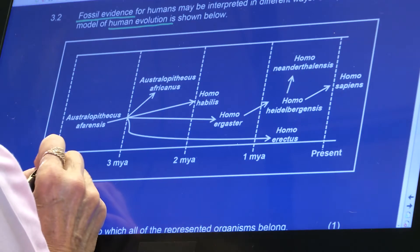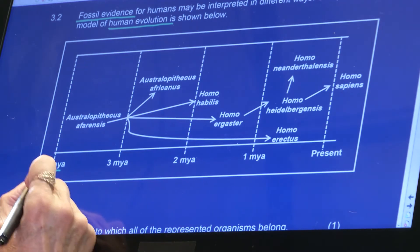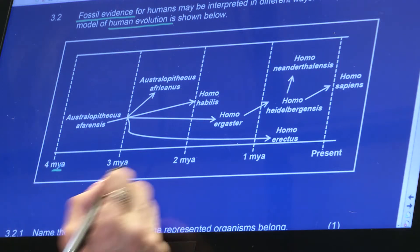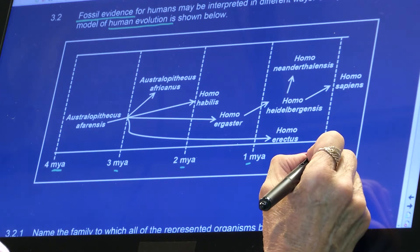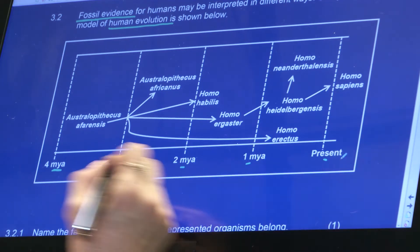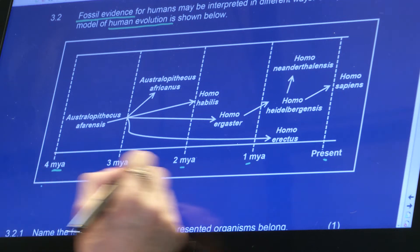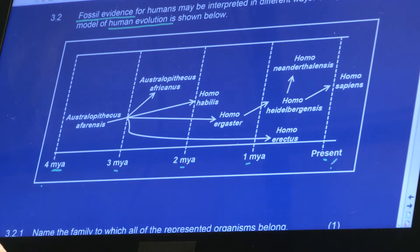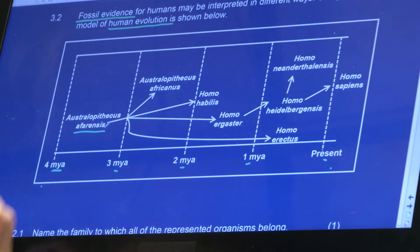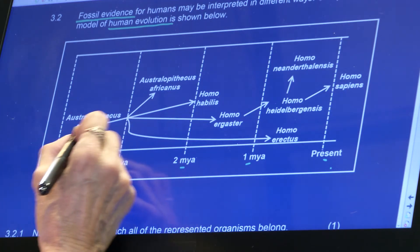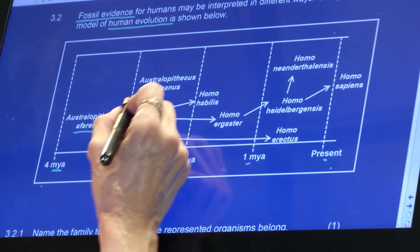Maya means millions of years. So that's 4 million years ago, 3 million years ago, 2 million years ago, 1 million years ago, and present. We started with Australopithecus afarensis, and at about 3 Maya — which is 3 million years ago — there was a split.